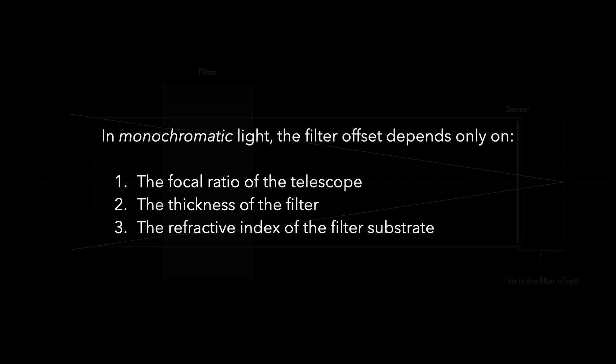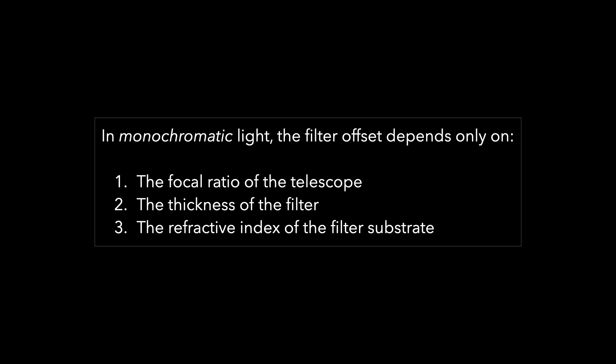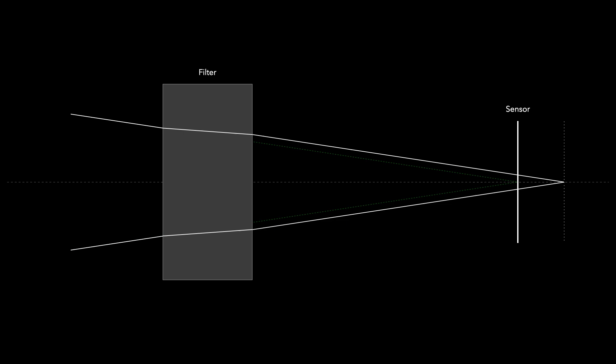With a monochromatic beam of light, the offset depends on the focal ratio of the telescope, the thickness of the filter, and the refractive index of the filter substrate at that wavelength. As you can imagine, once a filter has been inserted in the light path, the image formed by the objective lens or mirror onto the sensor is no longer as sharp as it could possibly be.